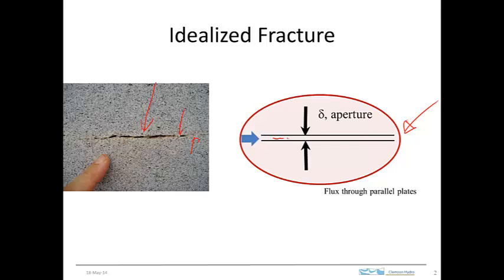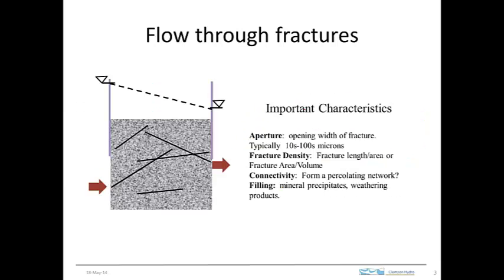There are these two plates and water is flowing between them. The aperture is an important characteristic of fractures. Here we have a set of fractures that are intersecting and we have a hydraulic head gradient imposed on them. If we're interested in flow through this material, then we're interested in the aperture of the fractures — that's going to be one of the fundamental characteristics. Typically in fractures in the subsurface, the apertures are in the range of tens to hundreds of microns.